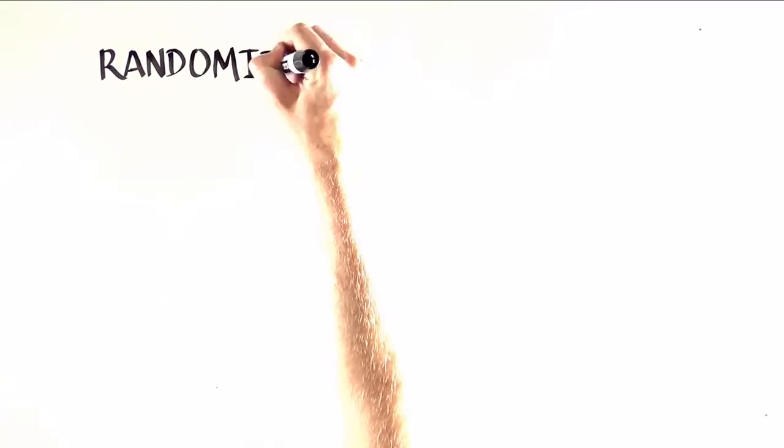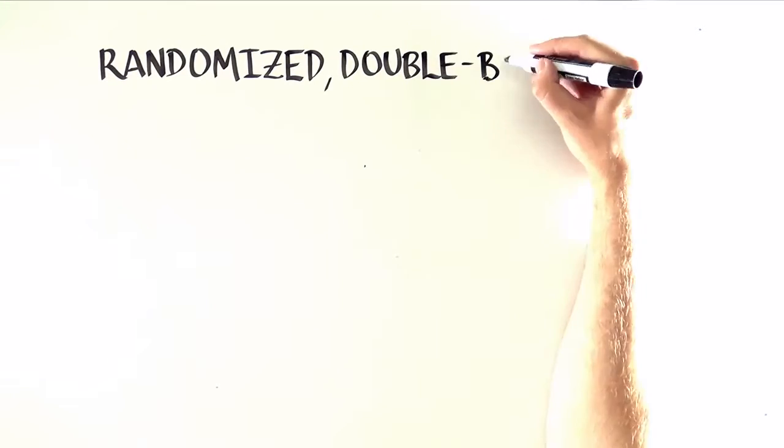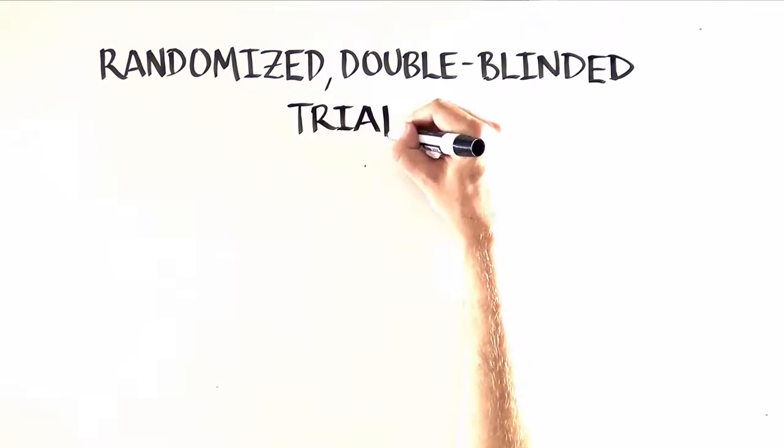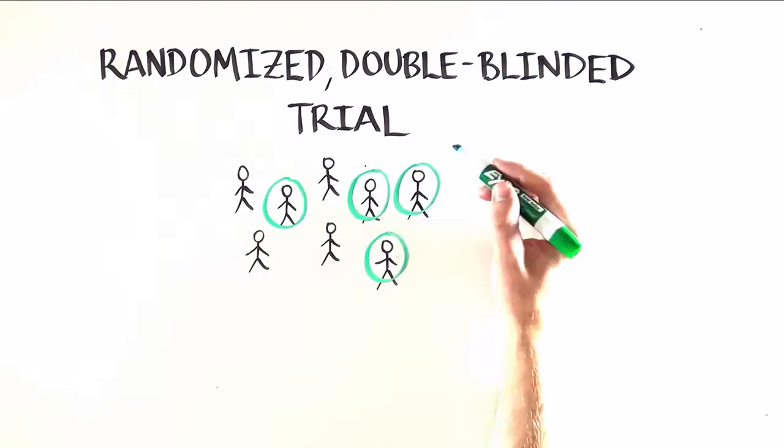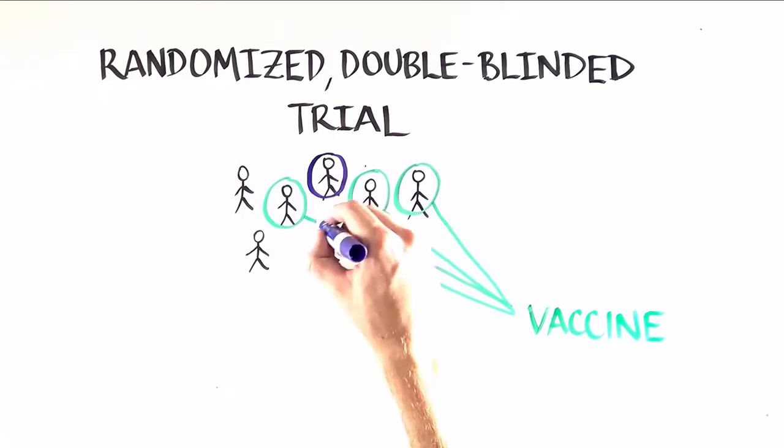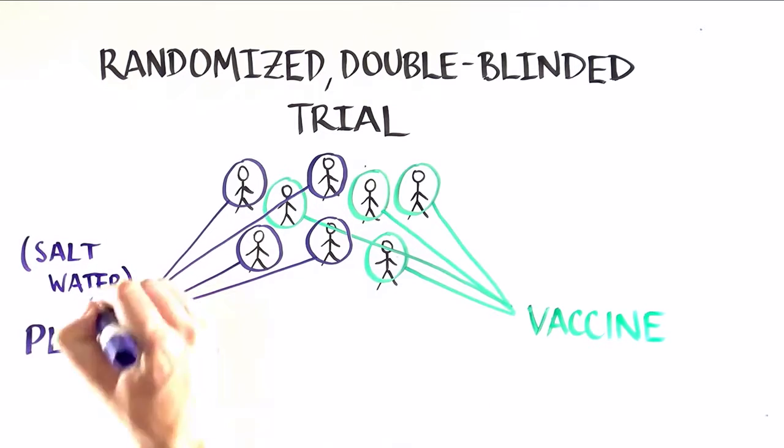We start what is called a randomized double-blinded clinical trial. What that means is that after volunteers enroll in a study, a computer randomly decides whether they will get the vaccine or whether they will get the placebo, which is usually just salt water.